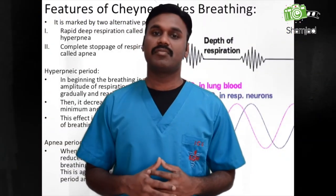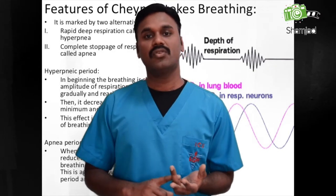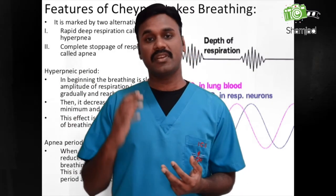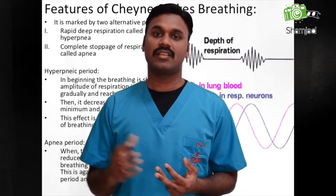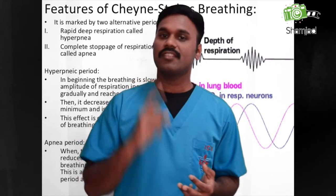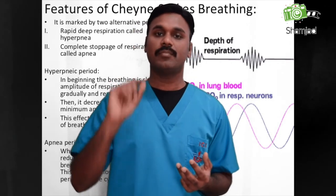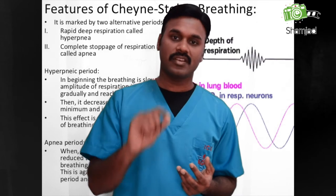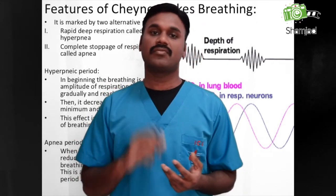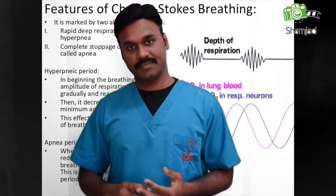There are two periods in this type of breathing. The first is the apnea period: during forced breathing, the O2 level rises and the CO2 level goes down, causing the respiratory center to become inactive, resulting in apnea. The second is the hyperpneic period: increased CO2 level leads to hypoxia, which activates the respiratory center, causing increased depth and rate of ventilation.